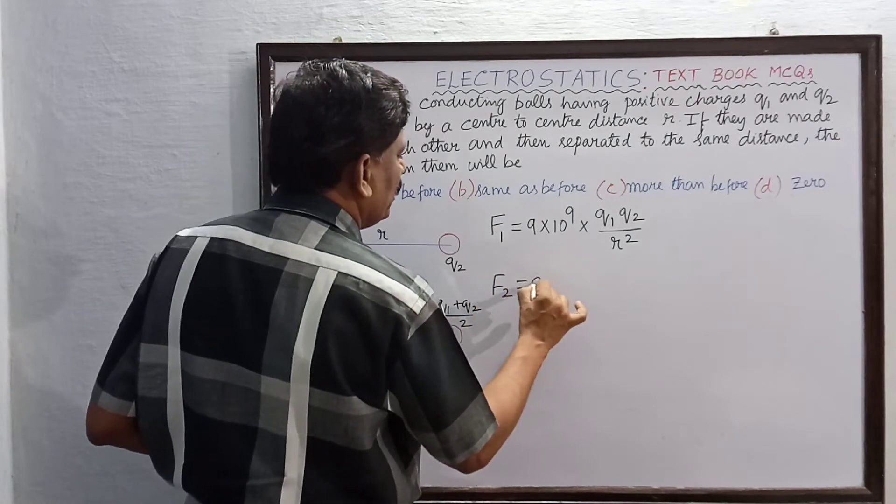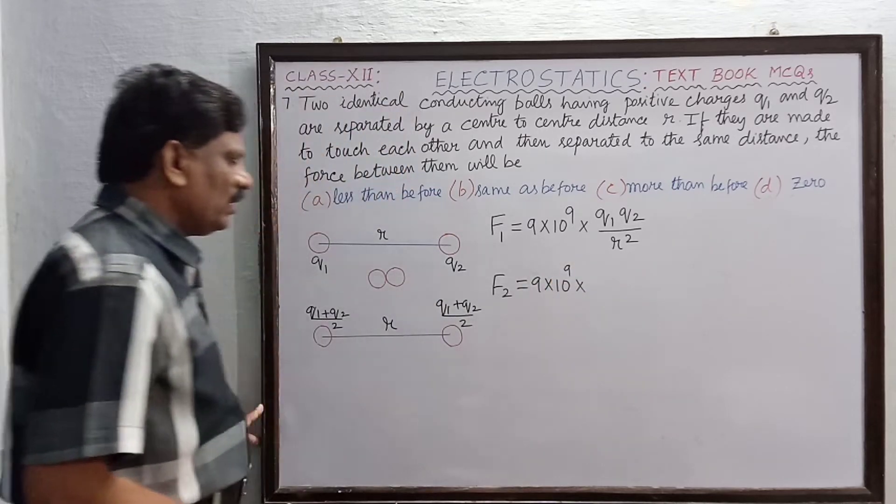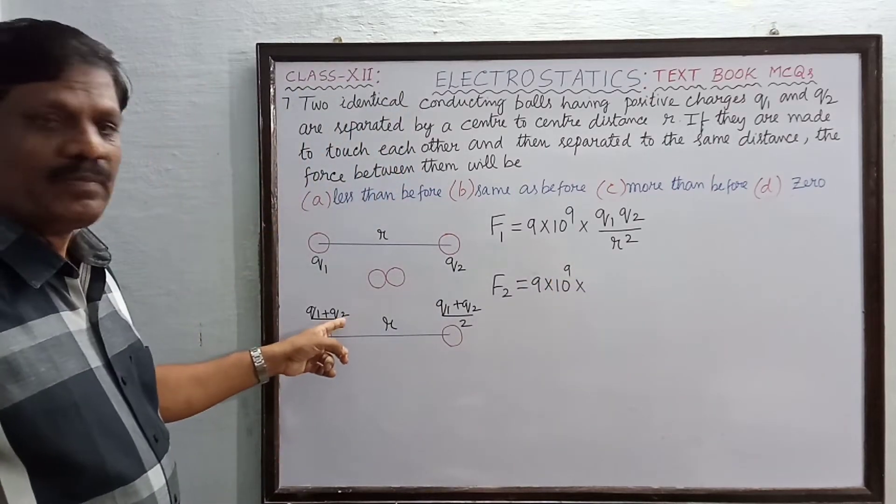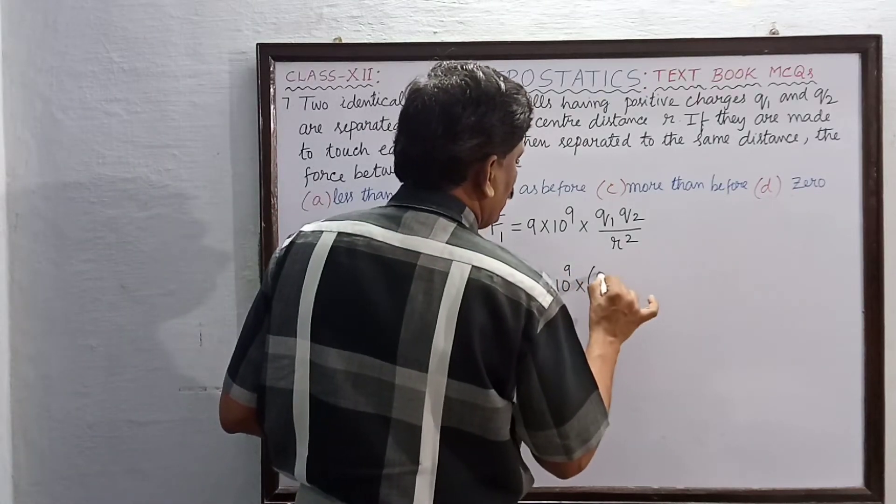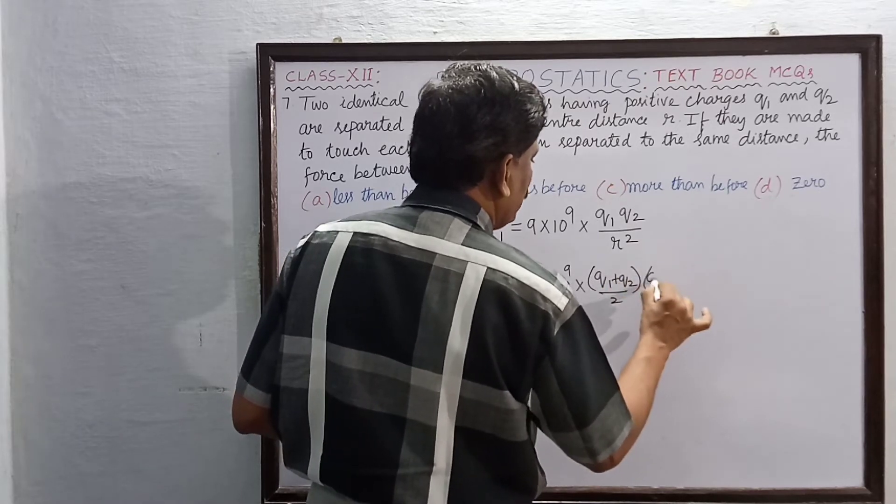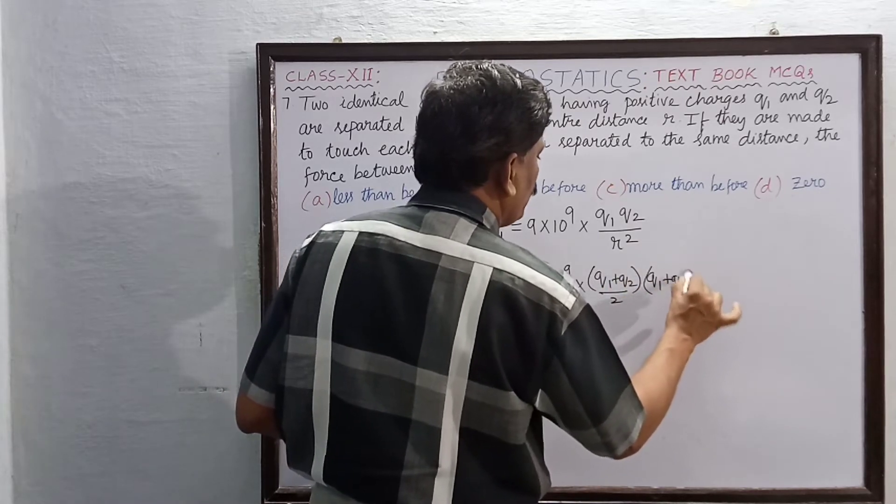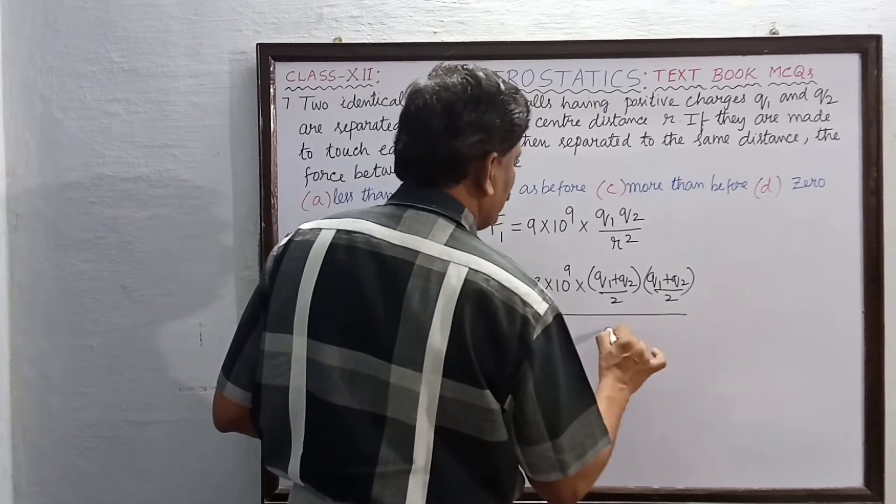F2 is equal to 9 into 10 to the power of 9 into the new charge (q1+q2) by 2, then it is (q1+q2) whole divided by 2 into (q1+q2) divided by 2, whole divided by r square.